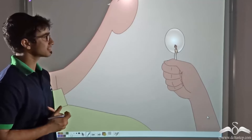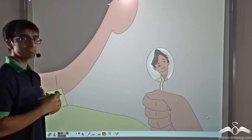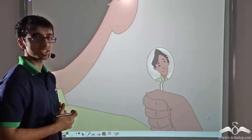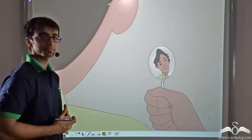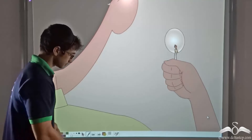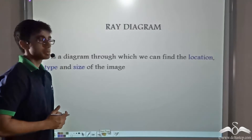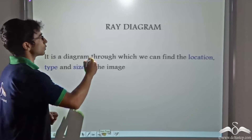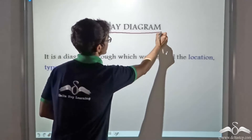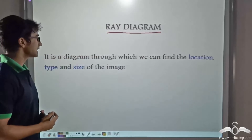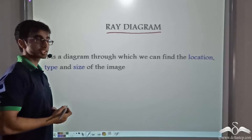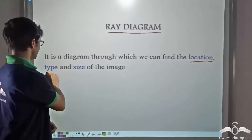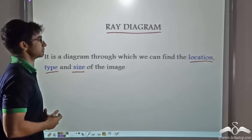Now why do you think this is happening? Can we find out diagrammatically how this change of size of the image is taking place? Let us find out. Before we talk about how we can obtain it diagrammatically, let us define what a ray diagram is. A ray diagram is a diagram through which we can find the location, type and size of the image.